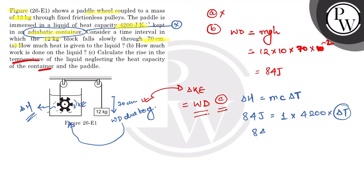Delta T equals 84 divided by 4200, that is 2 into 10 power minus 2 Kelvin.